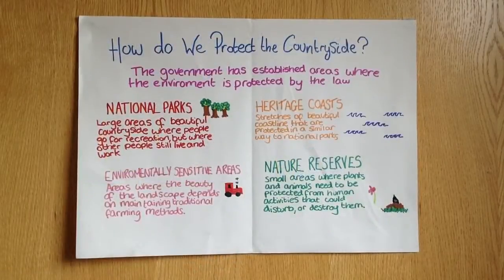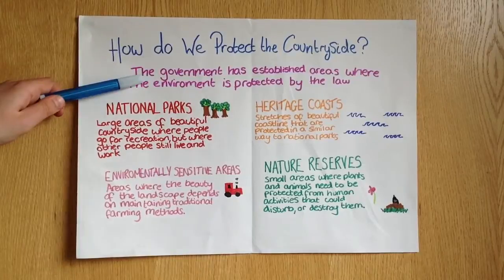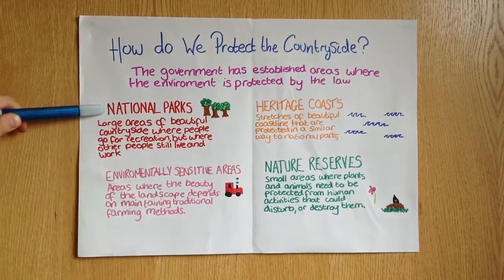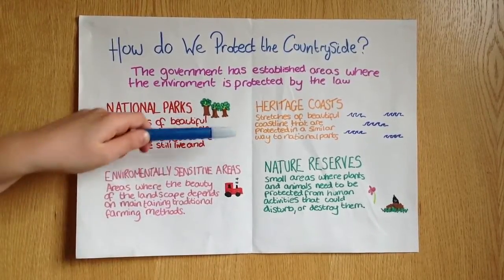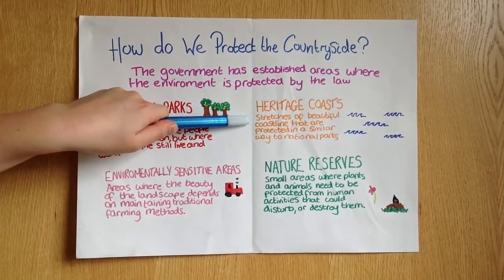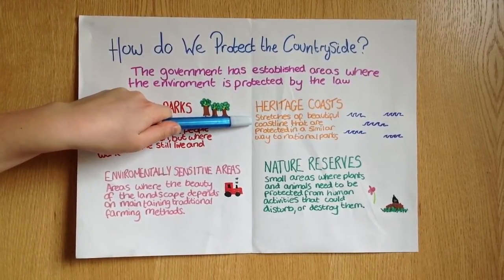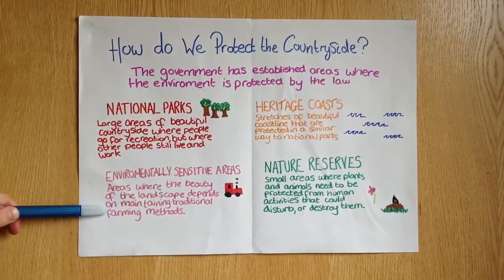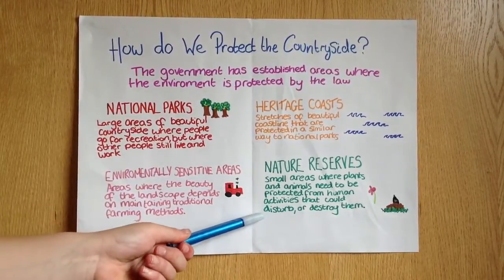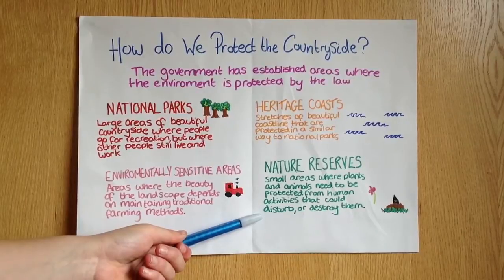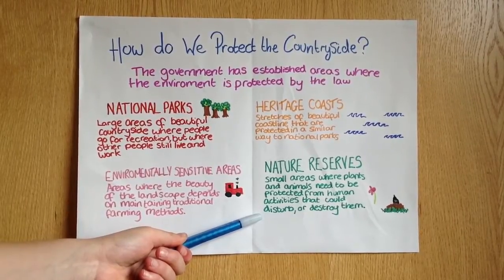So how do we actually protect the countryside? The government has established areas where the environment is protected by law. There are national parks, which are large areas of beautiful countryside where people go for recreation but where other people still live and work. Heritage coasts, which are stretches of beautiful coastline protected in a similar way to the national parks. Environmentally sensitive areas, where the beauty of the landscape depends on maintaining traditional farming methods. And nature reserves, which are small areas where plants and animals need to be protected from human activities that could disturb or destroy them.